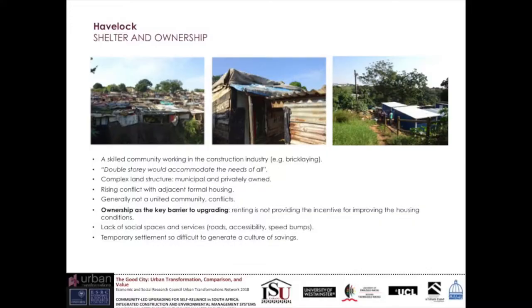The third case study is a project where the community is just now starting to discuss upgrading — it's not a completed project. It's a very skilled community; many people work in the local construction industry and would welcome the double-story building approach. Most residents currently rent shacks made from waste materials from surrounding construction sites. Ownership is actually a barrier to upgrading here, because everybody sees this as a temporary settlement. Renting does not provide incentive for improving housing conditions, and the site is adjacent to formal housing where former residents want to clear the area.